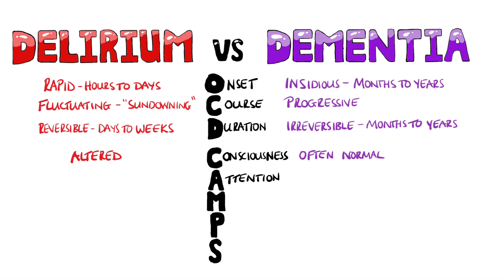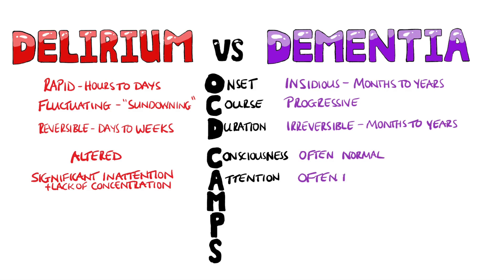A is for attention, which again can be altered in both dementia and delirium. But in delirium, there is a significant impairment typically present. While in dementia, the attention may be somewhat normal, given that overall dementia is mostly associated with memory loss, while delirium heavily features a lack of concentration and inattention.